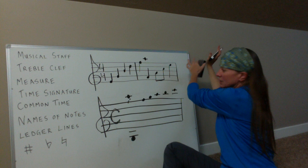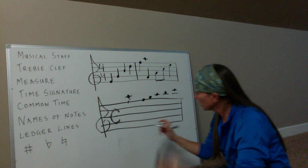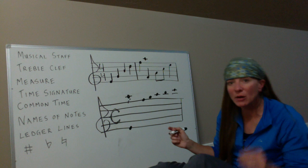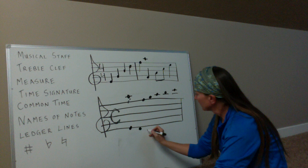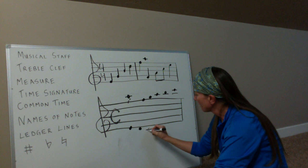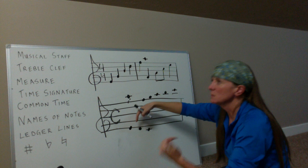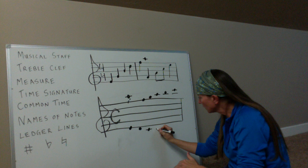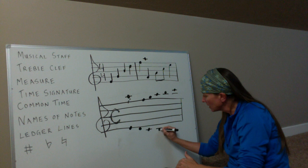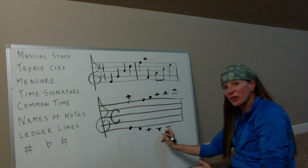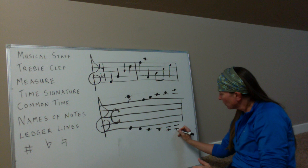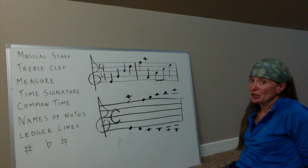Going down the staff, you go backwards in the alphabet. Starting from E on the first line: the space below is D, then you draw a ledger line for C, the space is B, another ledger line for A — and then we reach the lowest note of the violin: G, because G comes before A in the musical alphabet.